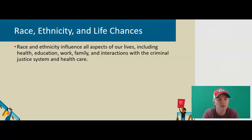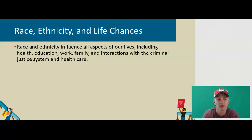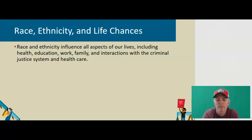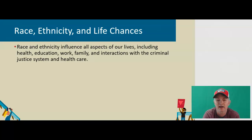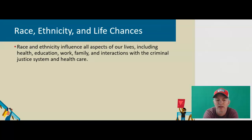How do these things affect your life chances? Race and ethnicity influence all aspects of our lives, including health, education, work, family, and interactions with the criminal justice system and health care. This connects to Max Weber's idea of life chances — opportunities in life which are different depending on the class into which we are born. We talked earlier about how race and gender intersect with class, so how could a person's race and ethnicity affect their own life chances? Health care is an area where we find widespread disparity between racial and ethnic groups. Disparities in access to health care may help explain the differing life expectancy rates for men and women of different races.